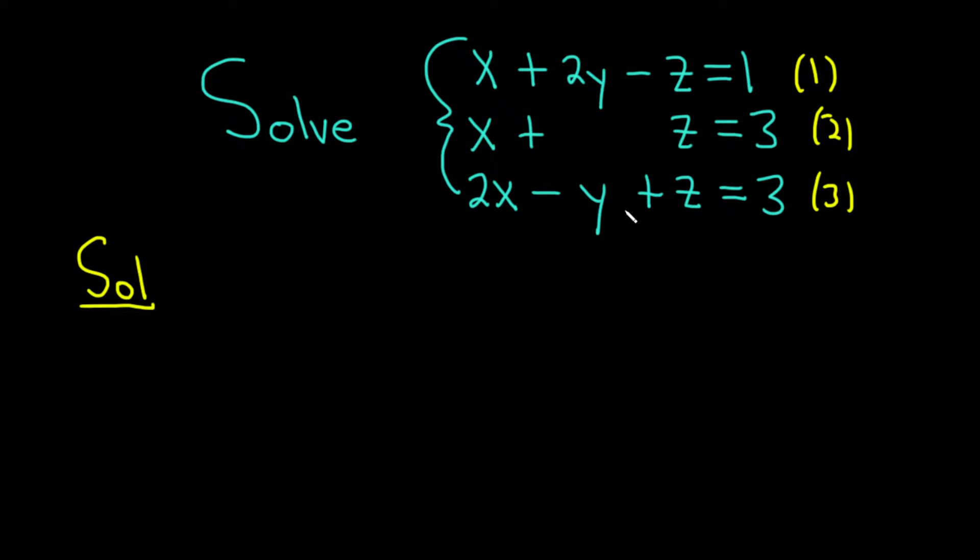So let's multiply this third equation by 2 so that this negative y becomes a negative 2y. And then we can add it to the first equation to eliminate the 2y. So multiply equation 3 by 2. That's what we're going to do first.